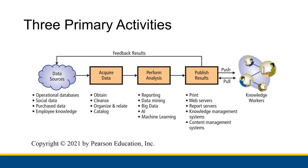I want to come back to this chart that we saw before, which gave the activities of the business intelligence system. I want to specifically point out the 'publish results' part and how they have the push and the pull to knowledge workers side of things. That refers to the two different types of publishing: push publish, where the business intelligence server delivers the report to the knowledge workers, and pull publish, where you make the knowledge workers request that information from the server.